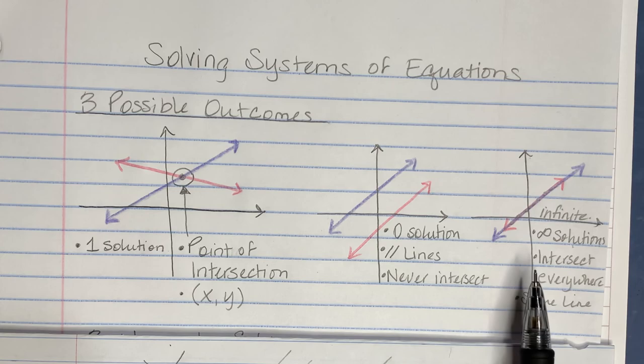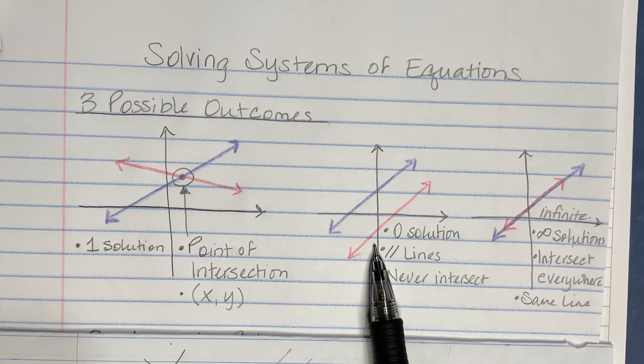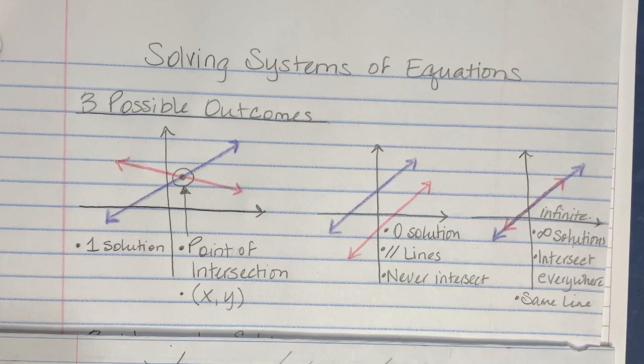To identify solutions to a system, we're looking for where the lines cross. They can cross once, never cross, or cross everywhere — meaning there is one solution, no solution, or infinite solutions.